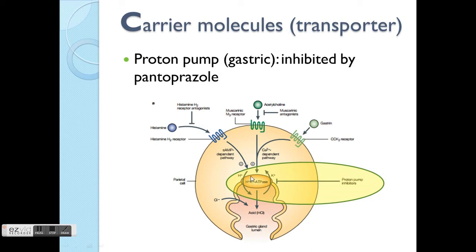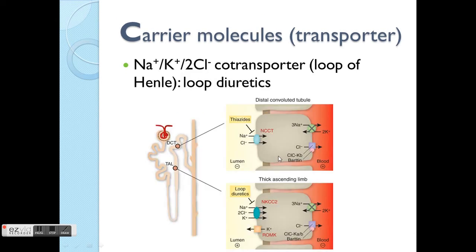H+ is pumped into the stomach via the H+/K+ ATPase pump — one H+ goes into the lumen and one potassium goes back out of the cell. If you inhibit this pump, you reduce the H+ secreted into the gastric lumen, meaning there will be less acidity in the stomach. The third and fourth examples occur at the nephron — the kidney level.